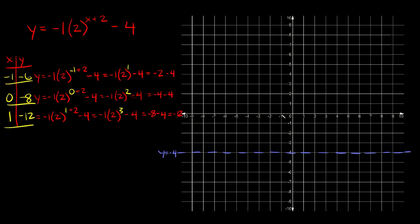Our three coordinates are (-1, -6), (0, -8), and (1, -12). We plot those points — noting the graph goes quite far down — with our asymptote at y = -4. Connect the dots and we have our exponential function graphed.